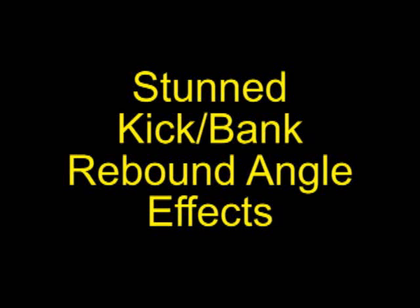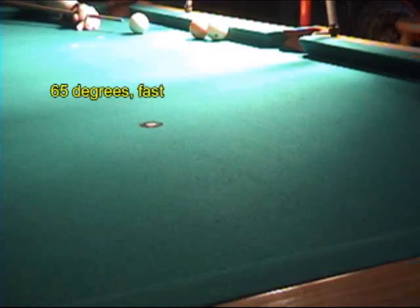This video looks at how a rebound angle of a ball stunned into a cushion varies with incoming angle, speed, and conditions. All angle values reported are measured relative to the rail perpendicular, so zero degrees would be straight into the rail.